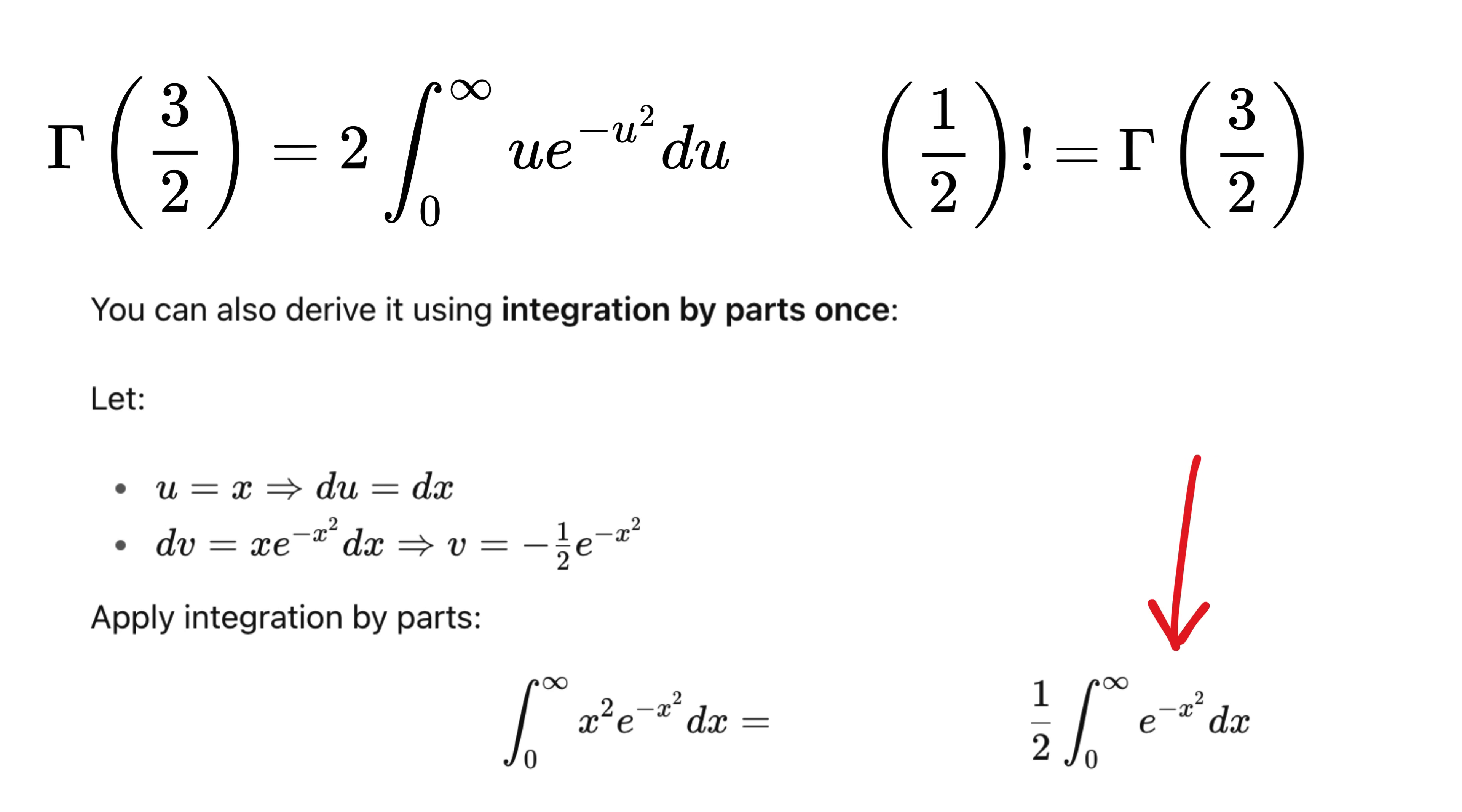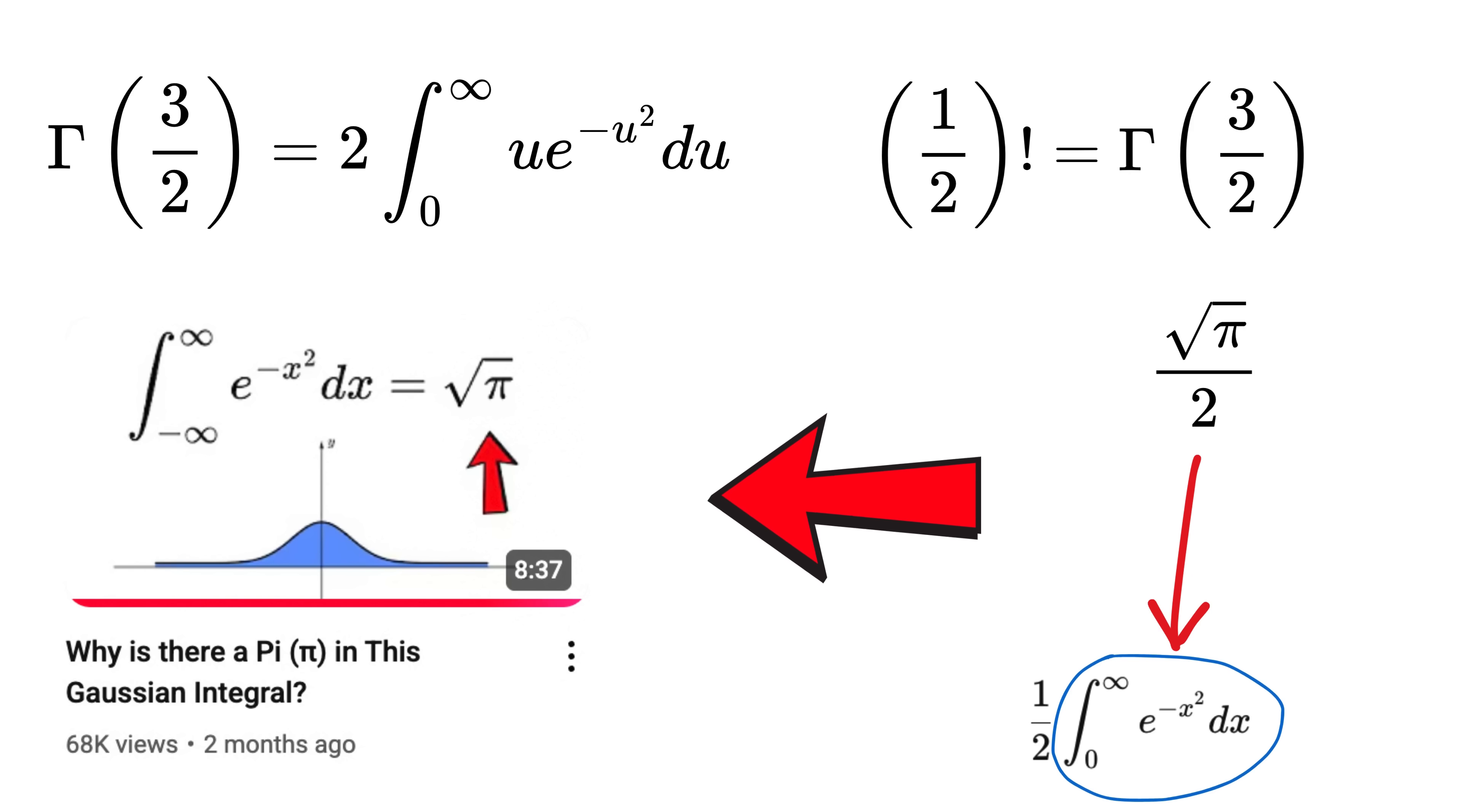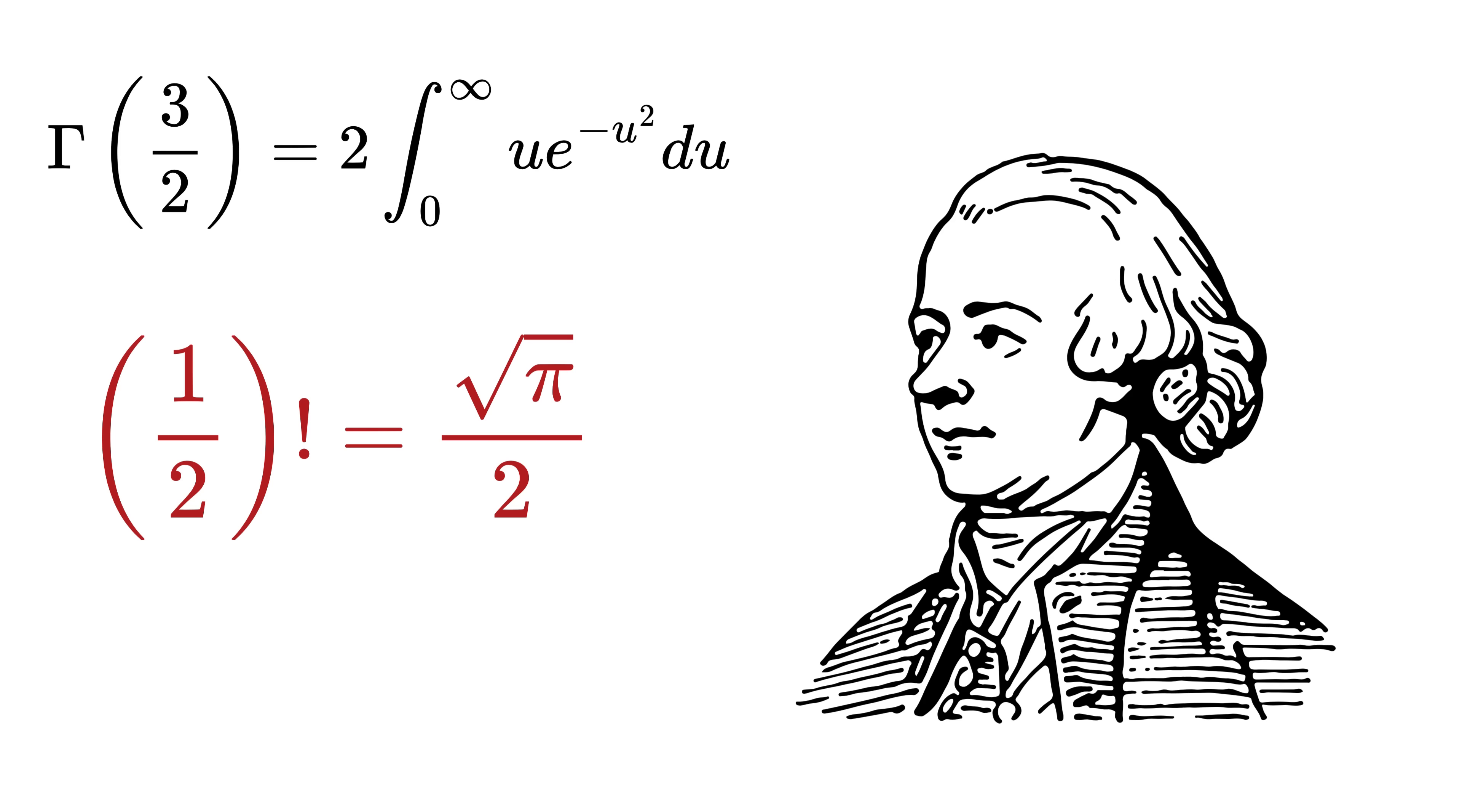Where this part is simply zero, and this is reduced to half of standard Gaussian integral, which is nothing but square root of pi. If you're wondering how we got this, I have already made a video on the same and the link is in the description. So folks, there you have it: this is how Euler connected pi, square root, and half with factorials.